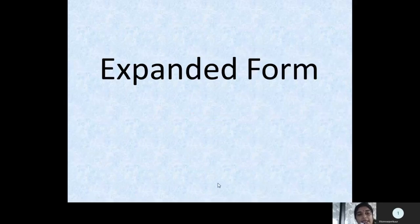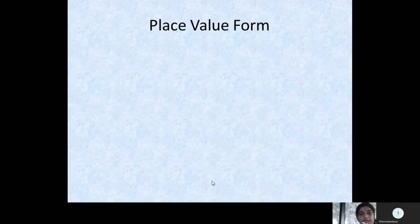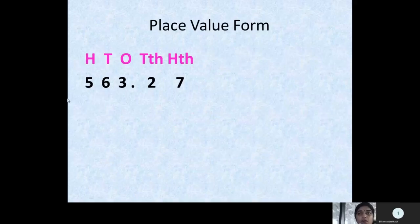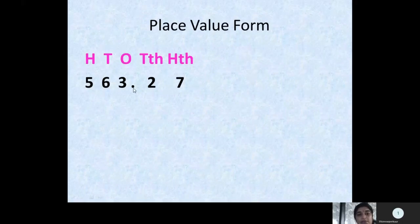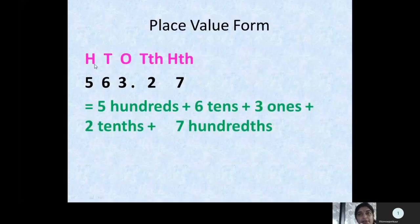Now let us learn how to write the expanded form of a given decimal number. Suppose we have the decimal number 563.27. For writing this in expanded form, we write the place of each digit on top: 3 is in ones place, 6 is in tens place, 5 is in hundreds place. After the decimal, 2 is in tenth place and 7 is in hundredth place. So we write: 5×100's + 6×10's + 3×1's + 2×10ths + 7×100ths.